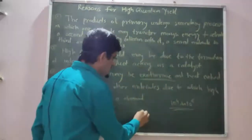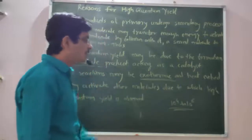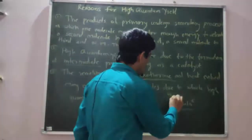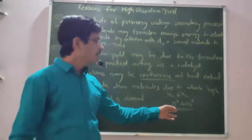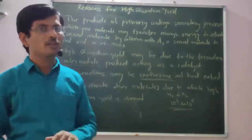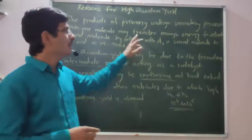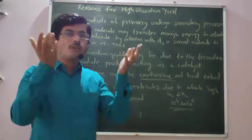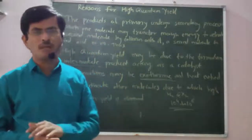If quantum yield is 1 according to the law, then in the hydrogen and halogen reaction, the quantum yield is in the range of 10 raised to 4 to 10 raised to 6 — meaning the number of molecules reacted by absorbing a single photon increases greatly, resulting in high quantum yield.